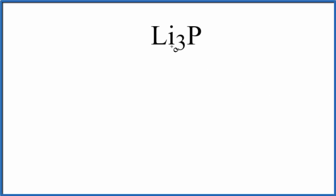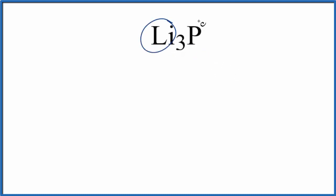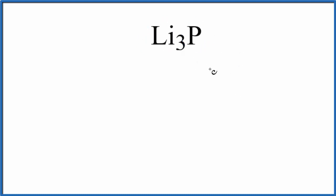In this video, we'll write the Lewis structure for Li3P, lithium phosphide. The first thing we need to recognize is we have a metal and a nonmetal. This is going to be an ionic compound, so each lithium is going to transfer its valence electrons to the phosphorus — metal to the nonmetal.